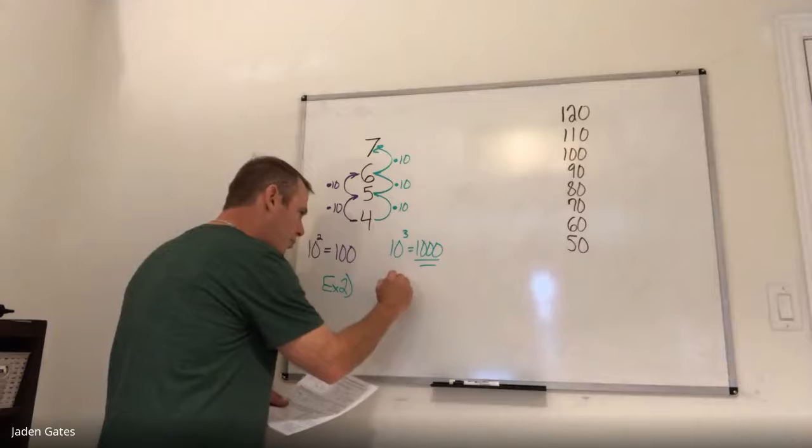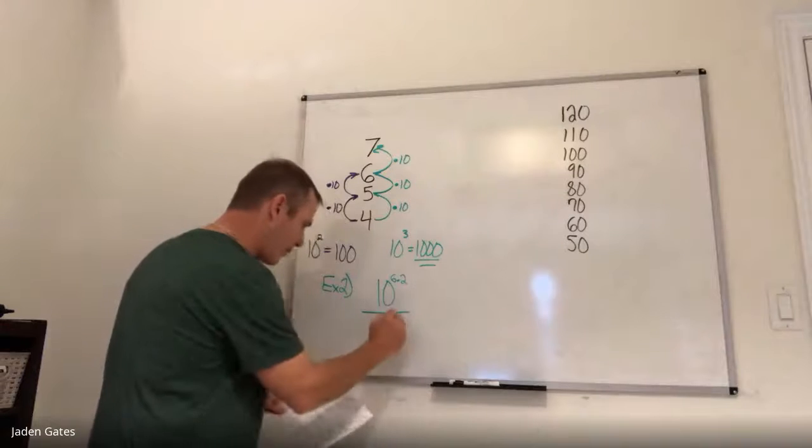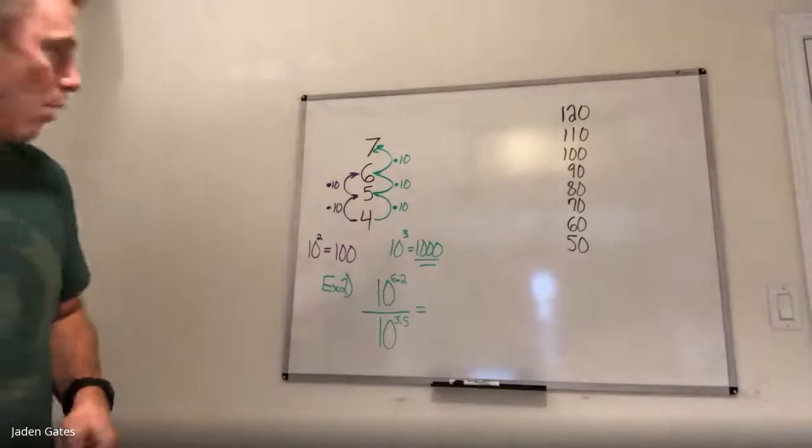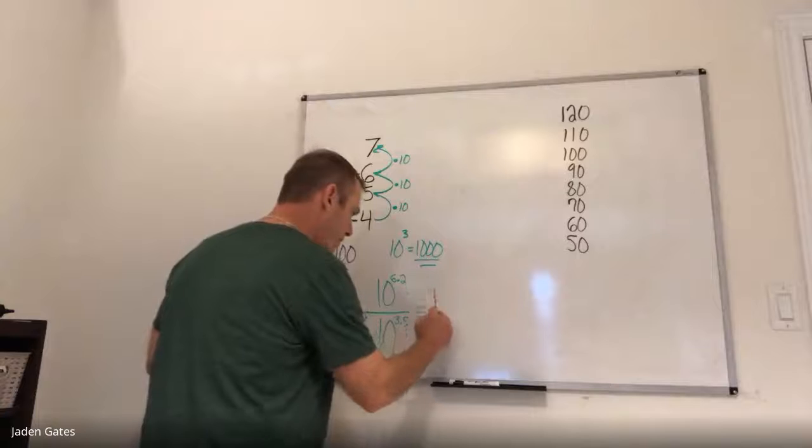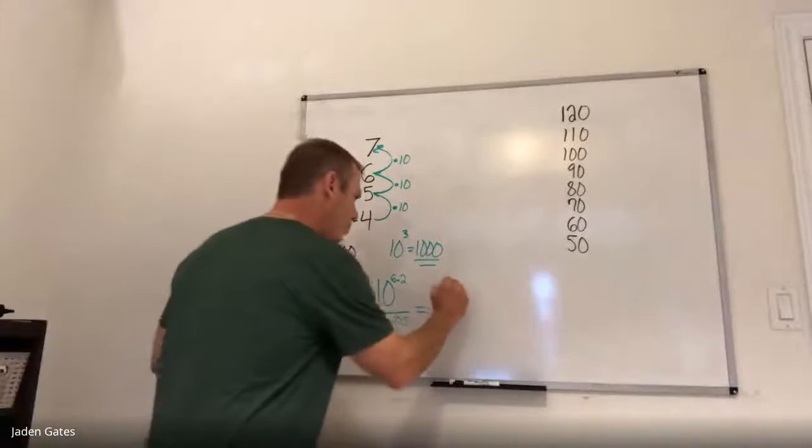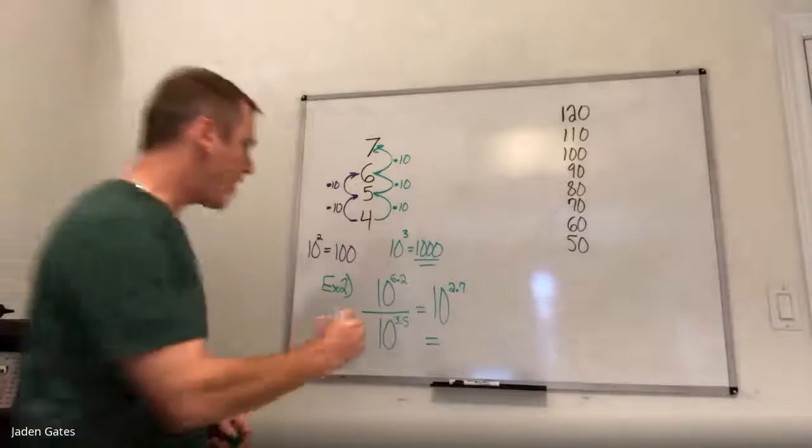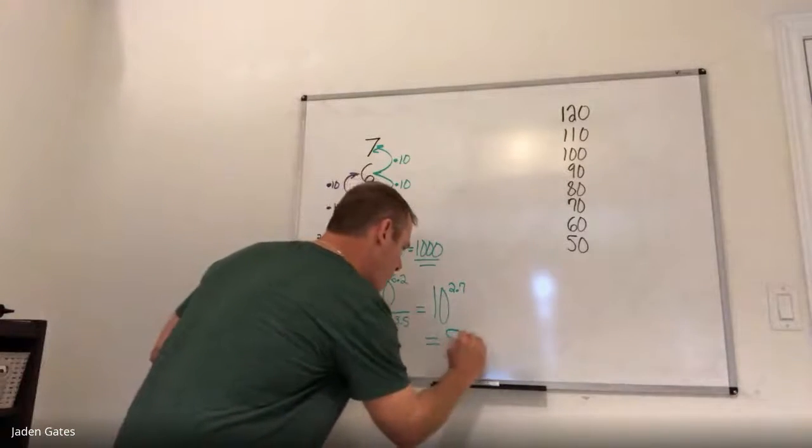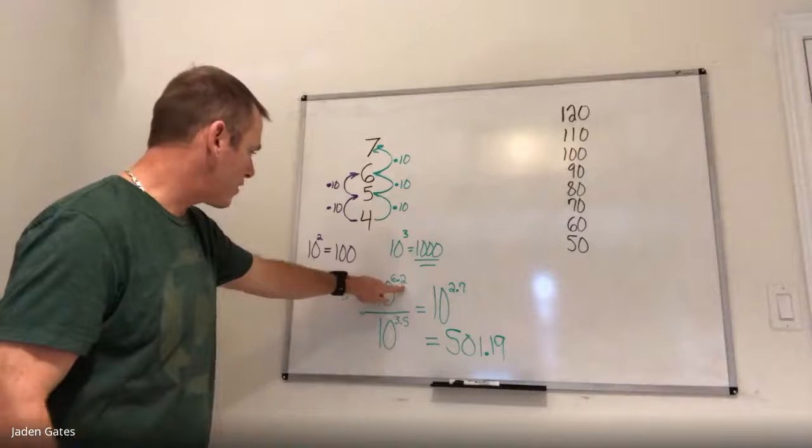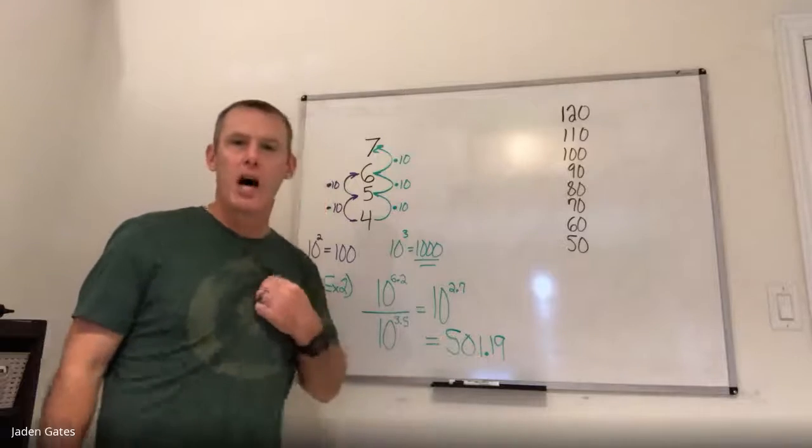So to compare that because it's a logarithmic scale, we have powers of 10. And so a 6.2 would be 10 to the power of 6.2 strong. And the three would be 10 to the power of 3.5 strong. And a little bit of grade nine math. I have a power divided by a power. I keep the base the same, subtract my exponents, which I'll go to my cheat sheet here is 2.7. 10 to the power of 2.7 is 501.19. And so if you are comparing an earthquake of a 6.2 magnitude to a 3.5 magnitude, it's actually 501.19 times stronger.